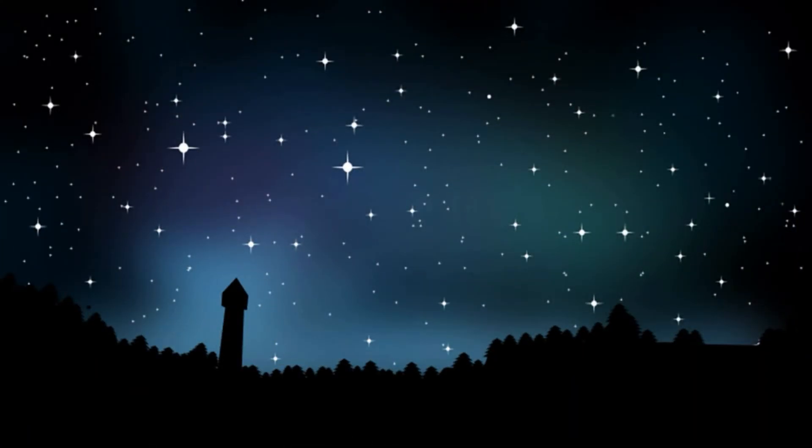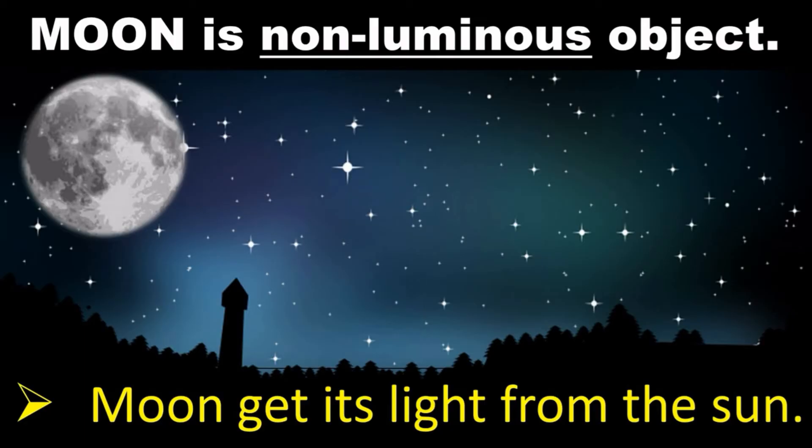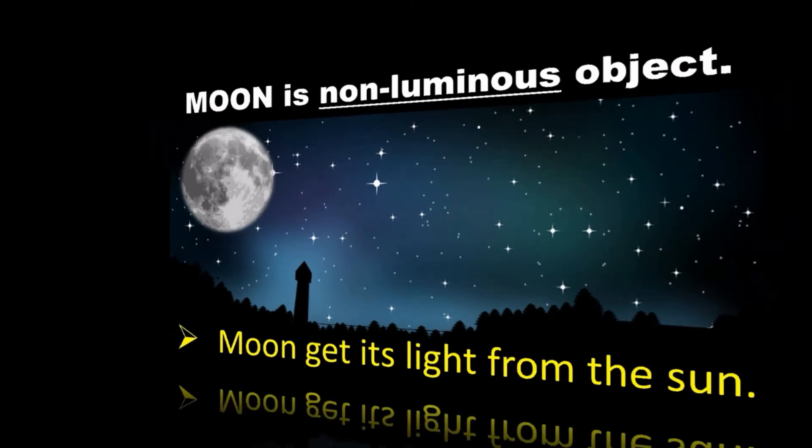Dear children, do you know the moon is also a non-luminous object? Yes, now you will say that moon shines and also gives light at night. Yes, it's true. But the light you receive from the moon is not moon's own light. Moon gets its light from the sun. And you know that when light falls on a non-luminous object, it is visible to us and we can see it.